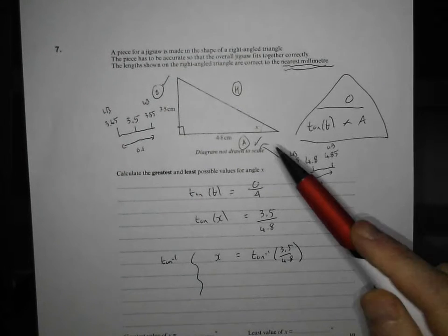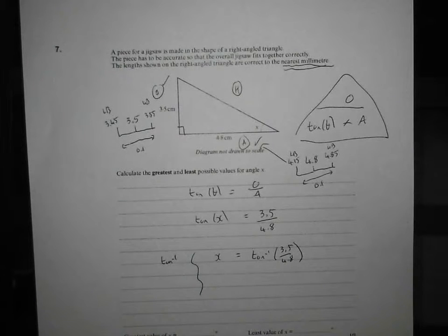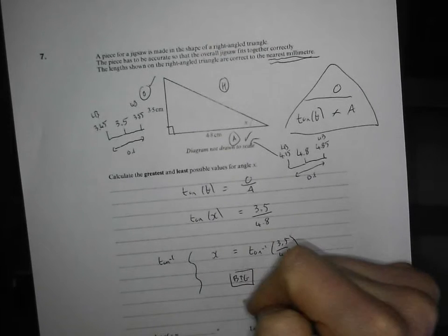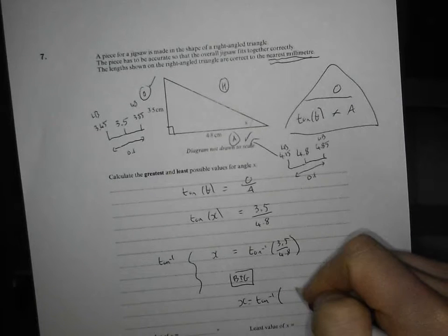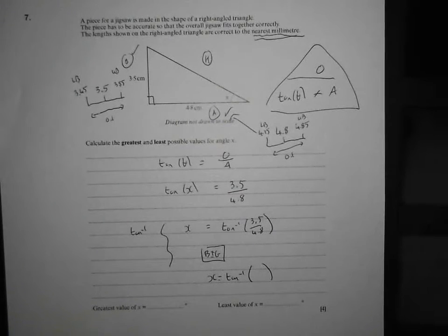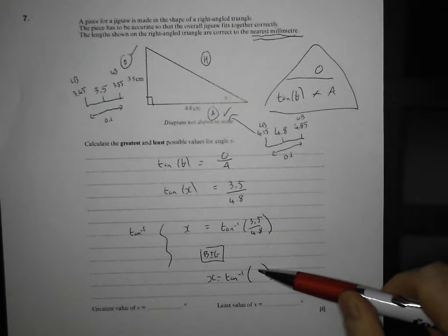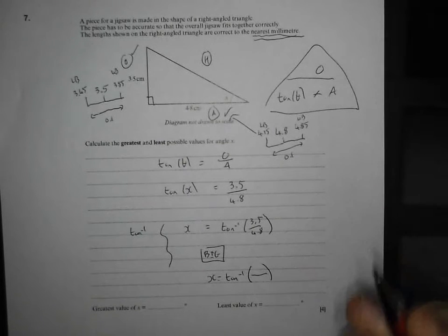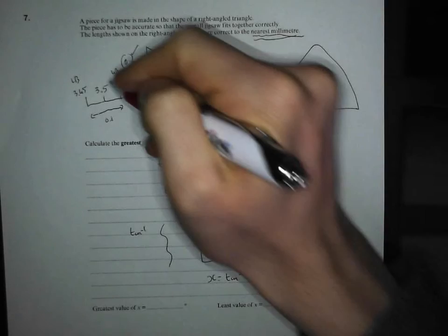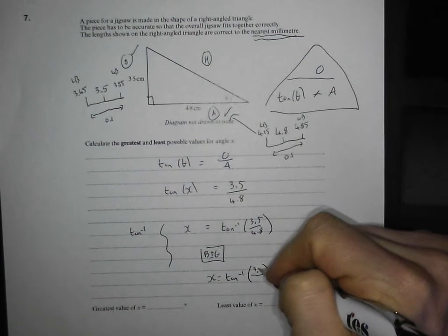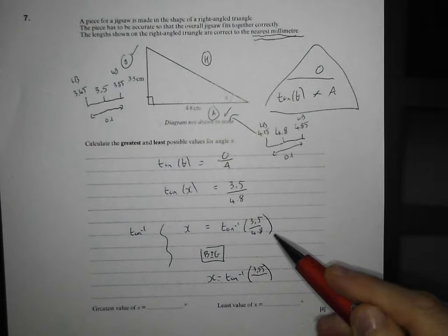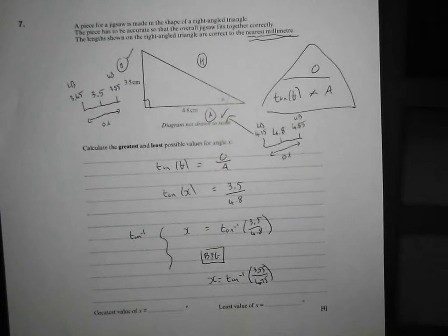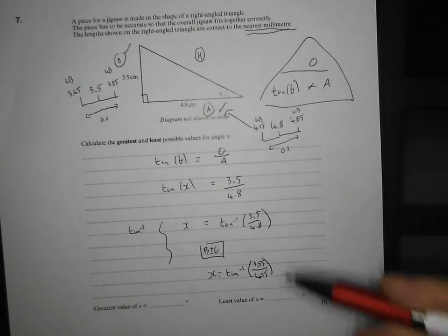So the question now is, how do we make this angle as big as it can be, and as small as it can be? So let's go for big first, or greatest, I guess I should say. X equals tan to the minus one of—now, if we want to make a division as big as it possibly can be, we need something as big as possible on the top, but shared by something as small as possible on the bottom. So we need our upper bound for the numerator, so as big as it can be, 3.55, divided by as small as it can be on the bottom, so divided by our lower bound of 4.75, and that's going to make our division as big as it humanly possibly can be. Big divided by small equals big.